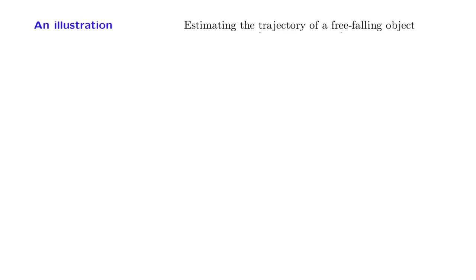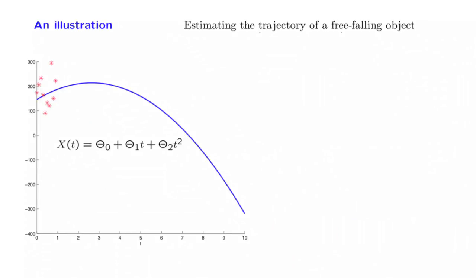Let us now come back to the trajectory estimation problem that we introduced earlier. We have an object that moves vertically. At any given time t, the height at which the object is found is equal to this expression.